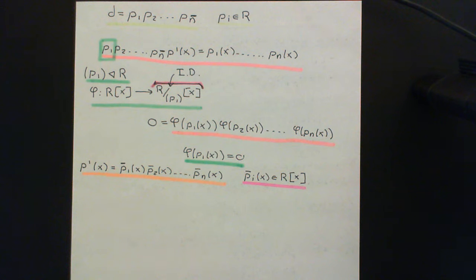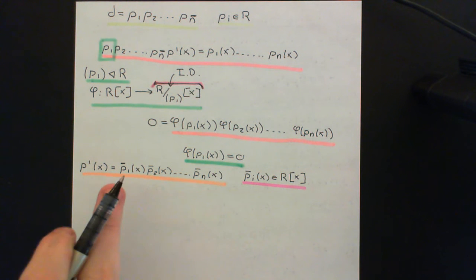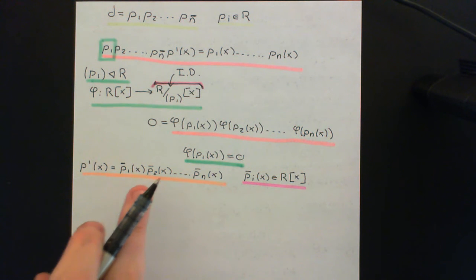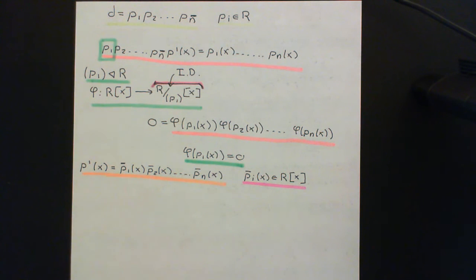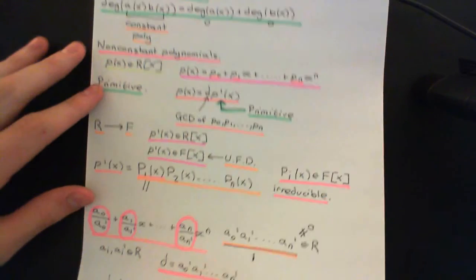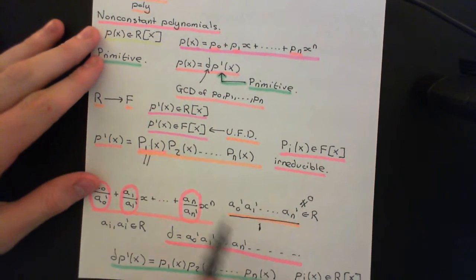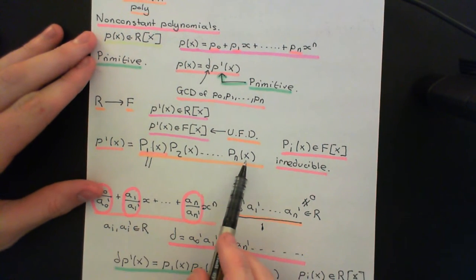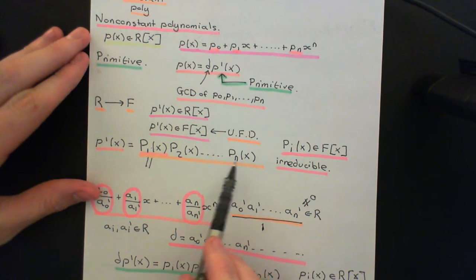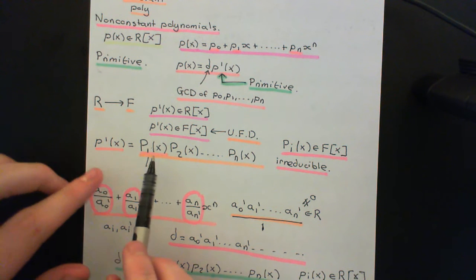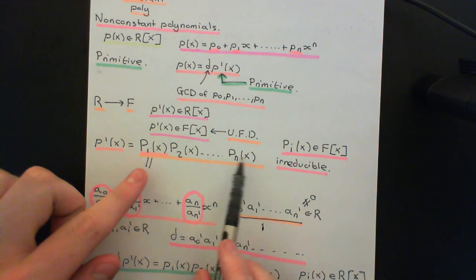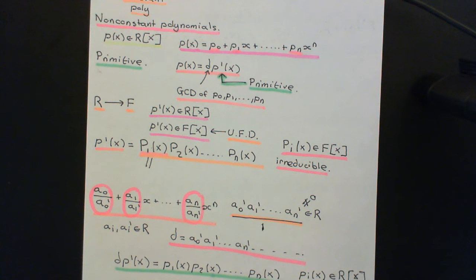Before we do that, let me just point something out about these polynomials. How did we get them? Let me remind you of where we got them from. We got them from this initial factorisation here of p'(x) into irreducible polynomials in the ring of polynomials over the fraction field F adjoin x.